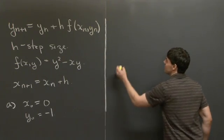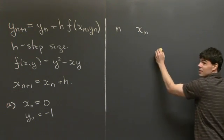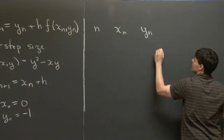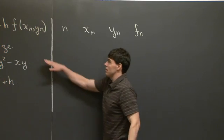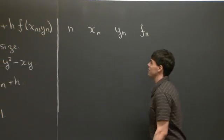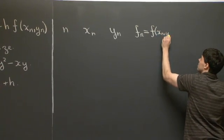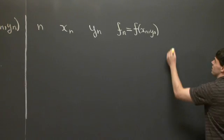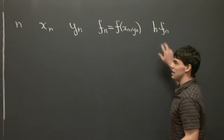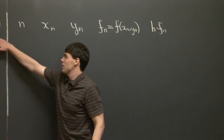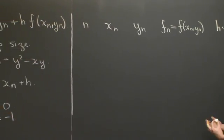So a nice table to build is one that has a column n, x_n, y_n. I'm going to write f_n. f_n is to denote f evaluated at x_n and y_n. And then it's also useful to write down h·f_n, because the quantity h·f_n comes up in the addition of y_{n+1} = y_n + h·f_n.